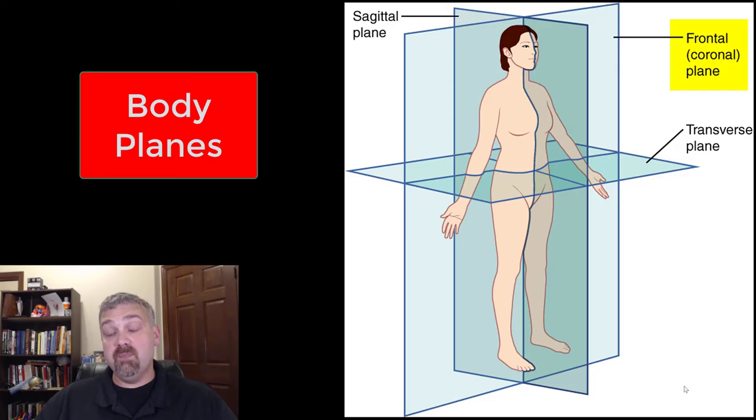Next, we have the frontal or coronal plane. So corona means crown. So the frontal plane will separate any structure into an anterior and posterior half, or a front and back half. So pretty straightforward there. So that's the frontal plane.